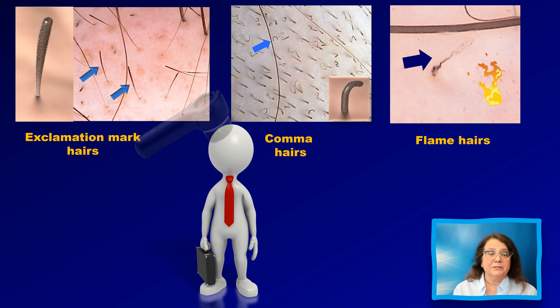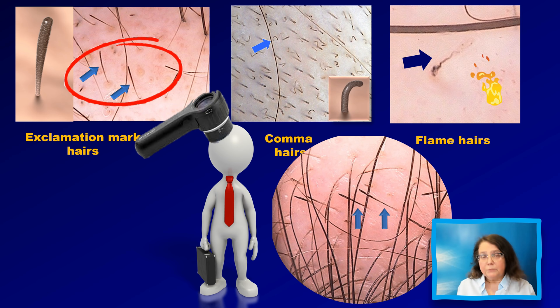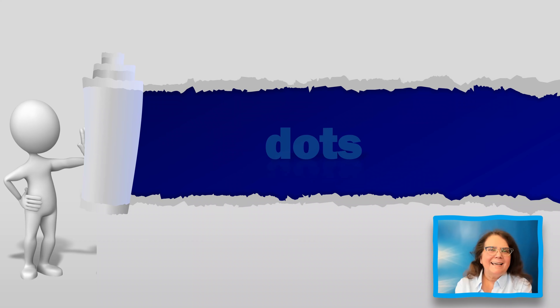Now let's go back to our patient. The patient comes in with hair loss, we use our dermoscope to look at the scalp, and this is what we see. Does it look like flame hairs? No. Does it look like comma hairs? No. But does it look like exclamation mark hairs? Yes. So our first thought would be that this is most probably alopecia areata, and we will proceed with diagnosing in that direction.